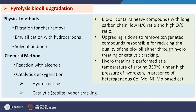Upgradation can be done through physical or chemical routes. Physically: filtration for char removal, emulsification with hydrocarbons, and solvent addition. Chemically: reaction with alcohols, catalytic deoxygenation via hydrotreating, and catalytic vapor cracking. Bio-oil contains heavy compounds with long carbon chains, low hydrogen-to-carbon ratio, and high oxygen-to-carbon ratio. Hydrotreating is performed at around 350°C under high pressure of hydrogen in the presence of heterogeneous cobalt-molybdenum or nickel-molybdenum based catalysts.